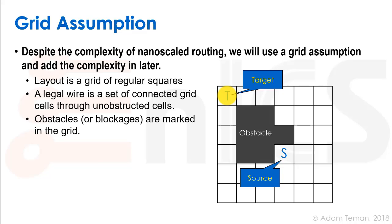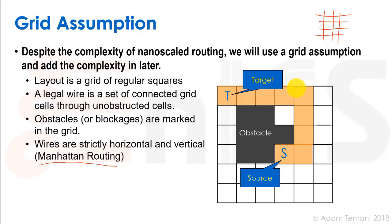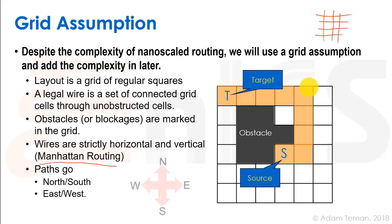For example, an obstacle may be a grid cell we've already used — we can't use it again or we'll create a short circuit between two nets. We're going to use Manhattan routing: like Manhattan's vertical avenues and horizontal streets, we'll always connect nets only in vertical and horizontal routes. Up and down are called northern and southern routes, and east and west are right and left routes.